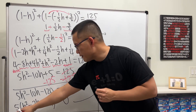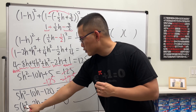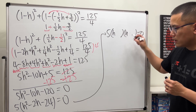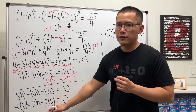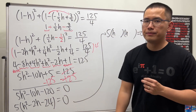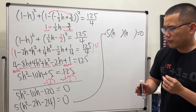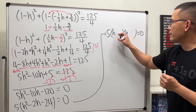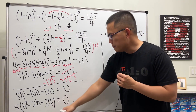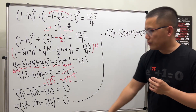Alright, we have the 5 in the front. Notice we have h squared, so we must have h and h. What times what gives minus 24, and when we add them we get negative 2? The correct answer is negative 6 and positive 4. Negative 6 times 4 is negative 24, and negative 6 plus 4 is negative 2.